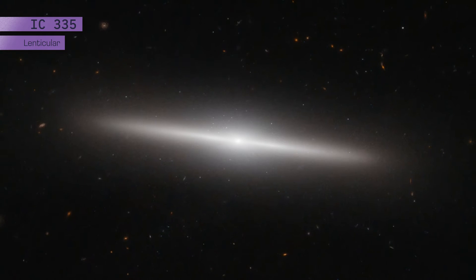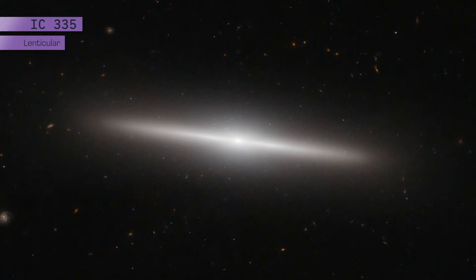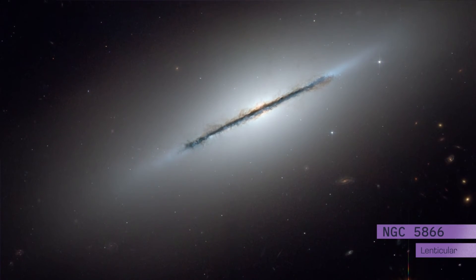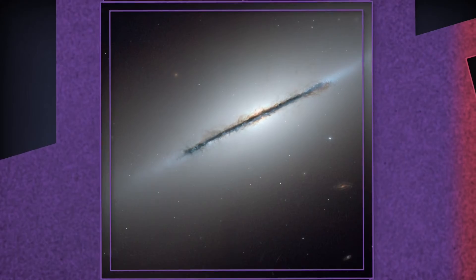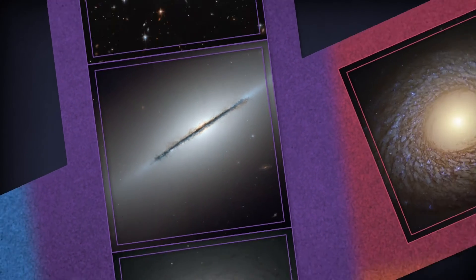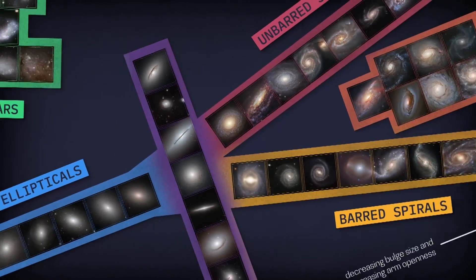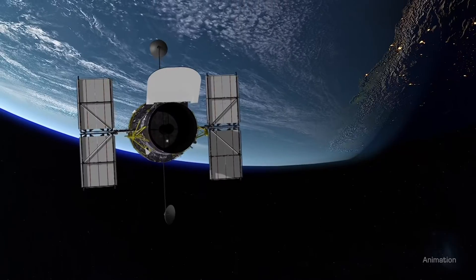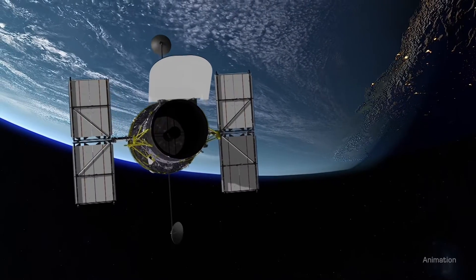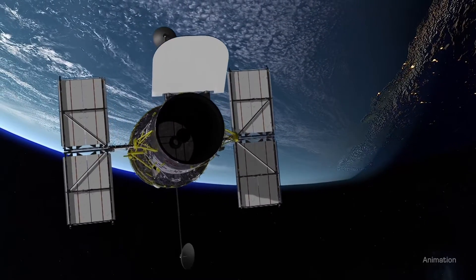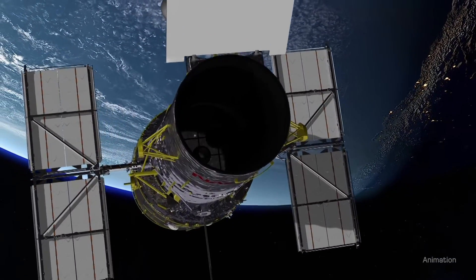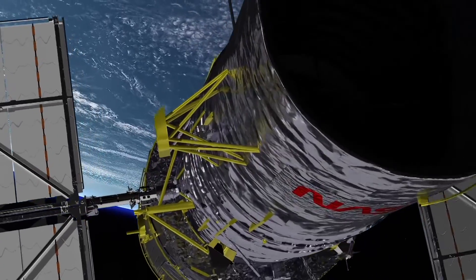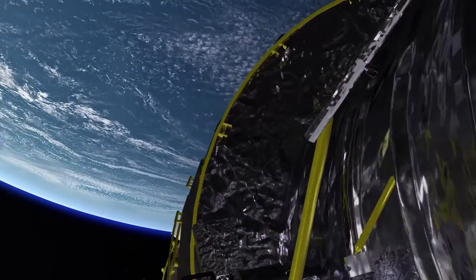When viewed edge-on, their shape resembles a lens, which is why they're called lenticular. Edwin Hubble's tuning fork was a first step in understanding galaxies and how they evolve. Observations by the Hubble Space Telescope will continue to improve our understanding of galaxies and their role in the evolution of the universe.